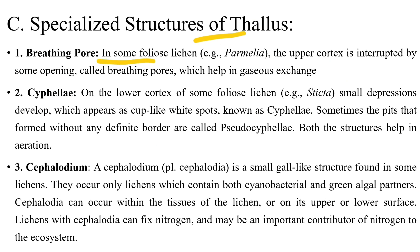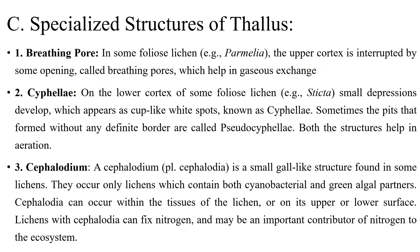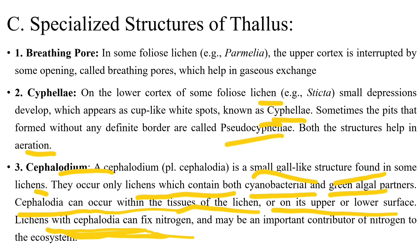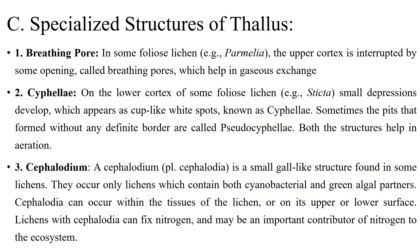Specialized structures of the thallus: a breathing pore is present for gaseous exchange. Cyphellae are present in the lower cortex of some foliose lichens and help in gas exchange. Cephalodia are small gall-like structures found in some lichens that contain both cyanobacteria and a green algal partner; they can occur within the tissue or on the upper or lower surface, and lichens with cephalodia can fix nitrogen.